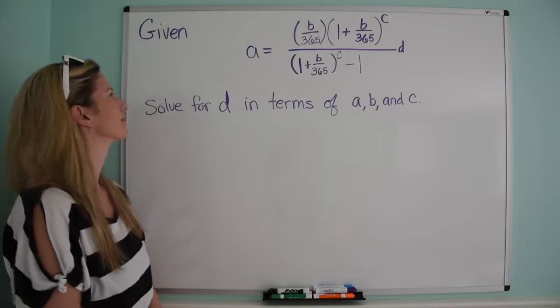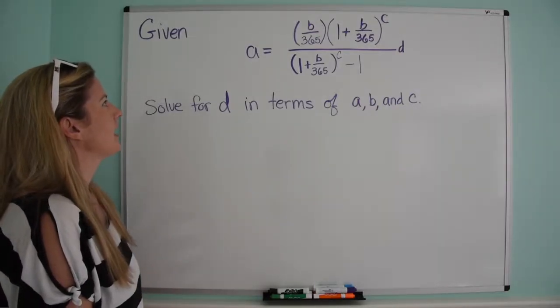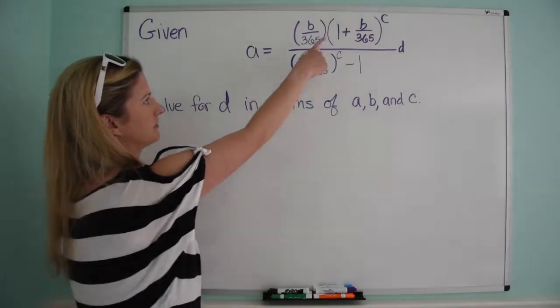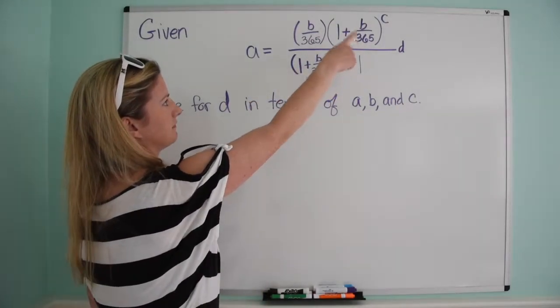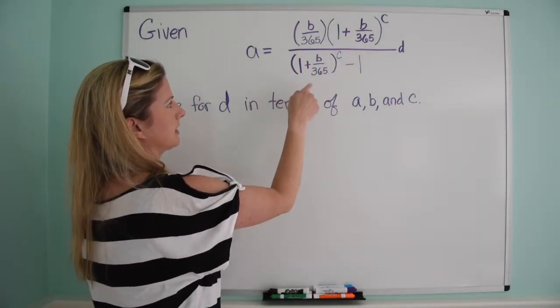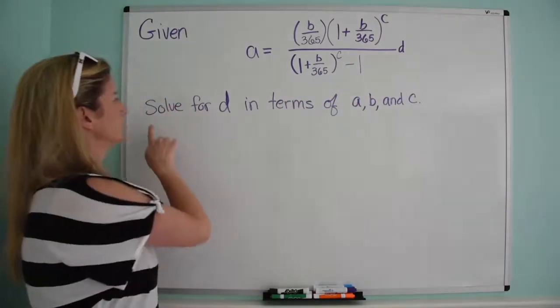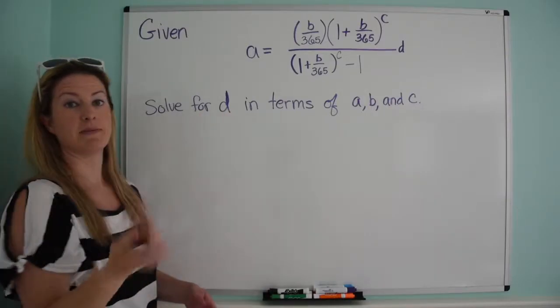Let's give this problem a shot. Alright, so given that a equals b over 365 times 1 plus b over 365 to the c, divided by 1 plus b over 365 to the c minus 1, times d, solve for d in terms of a, b, and c.